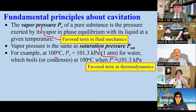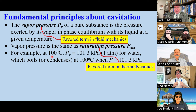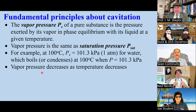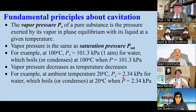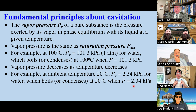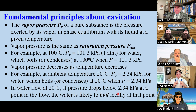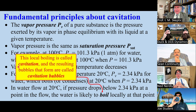We all know that water boils at 100 degrees C at 1 atmosphere — that means PV is 101.3 kPa at 100 degrees C. But vapor pressure decreases as temperature decreases. At 20 degrees C, PV is only 2.34 kPa. So water will boil or condense at room temperature when the pressure is this low. If the pressure drops below PV at any point in the flow, the water is likely to boil locally. We call this cavitation.